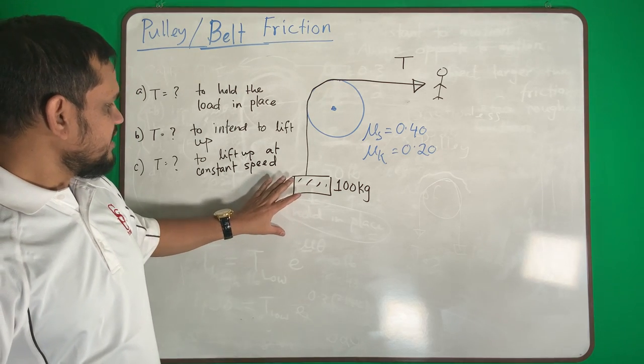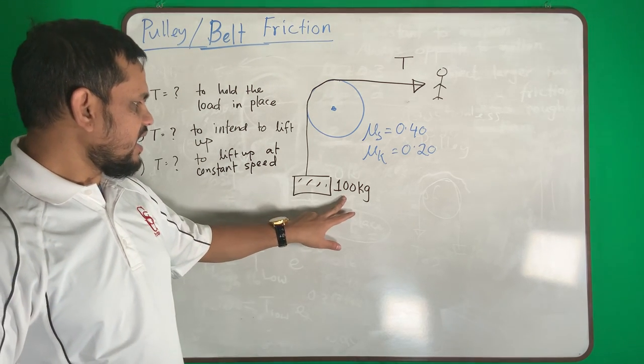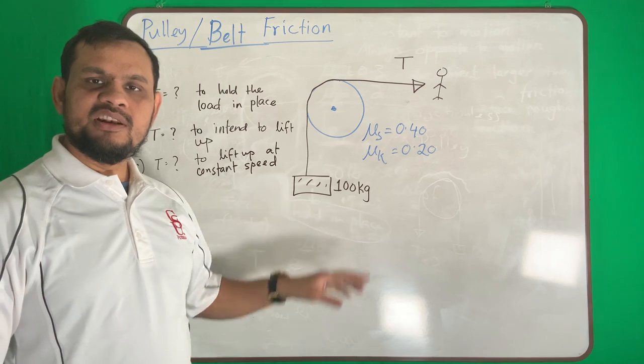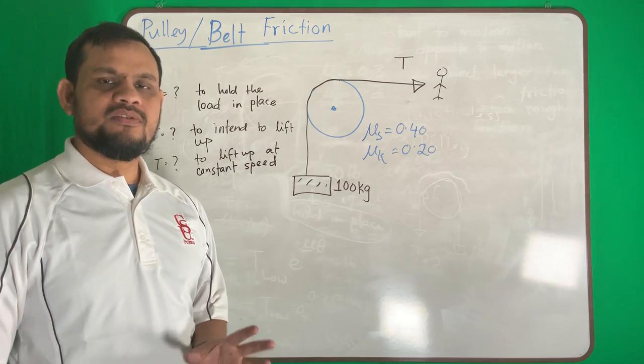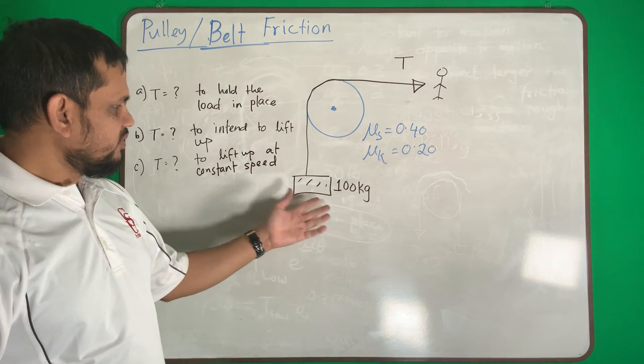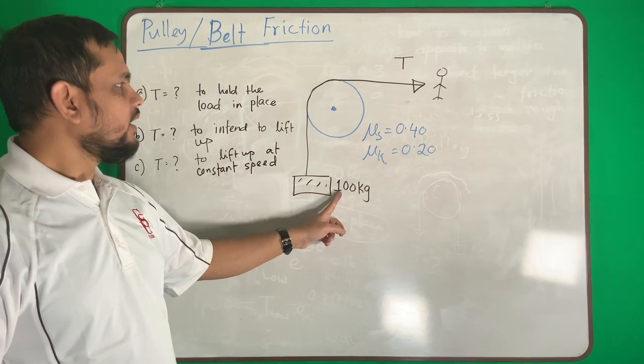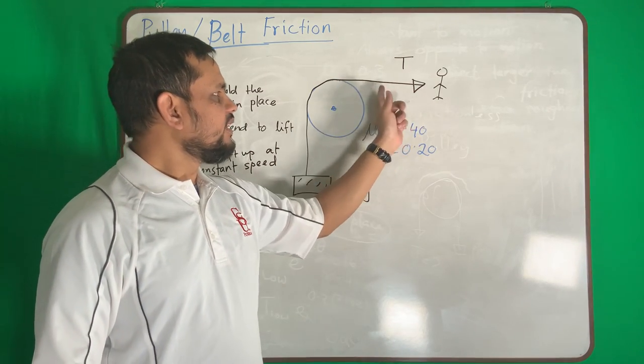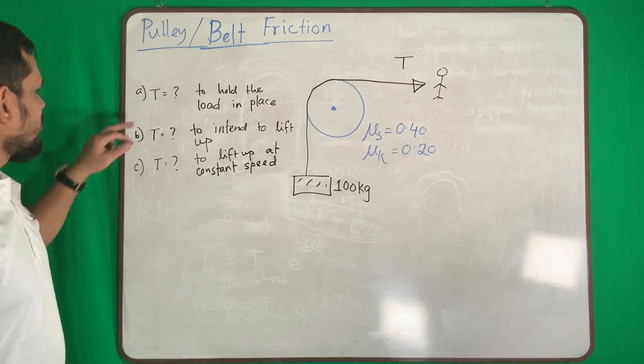Now there is an object here which is 100 kilogram. Kilogram is a mass, it is not a force, so we need to convert it to force. Then somebody is pulling this way. The question is what